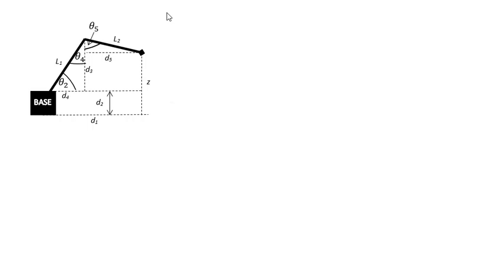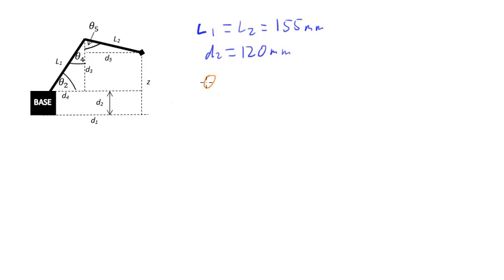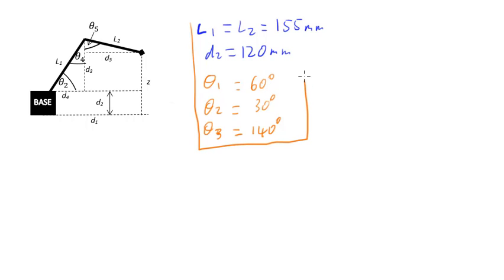In this video, I'm looking at a particular example where the two lengths of the arm are exactly the same: l1 equals l2, and they're both 155 millimetres long. And d2, the height of the base, is 120 millimetres. I'm also going to have my initial angles θ1, θ2, and θ3 being 60 degrees for θ1, 30 degrees for θ2, and 140 degrees for θ3.